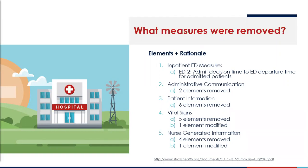Now we're going to go into a little more detail and review the EDTC measures, providing the rationale and evidence that was supported for removal. Under number two, administrative communication — the nurse-to-nurse and physician-to-physician communications — these were elements that were actually removed. The rationale was that there was evidence supporting that this pre-transfer communication was happening regularly, and so documentation of the process didn't add any value.